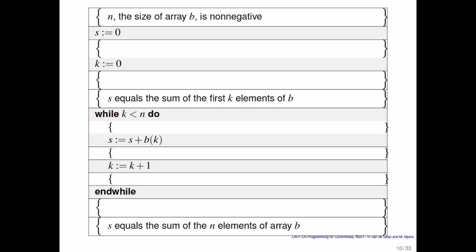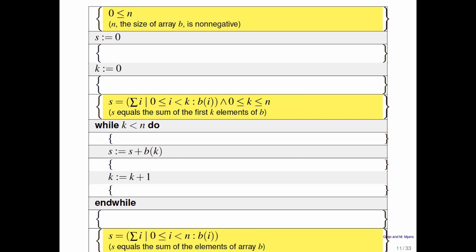These are English sentences. What we want to do is translate those into predicates. So we say that 0 must be less than or equal to n before the program starts.